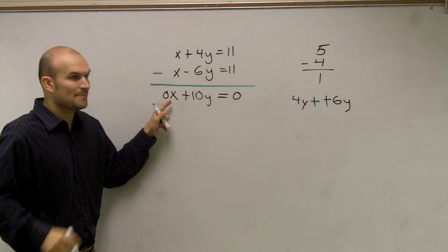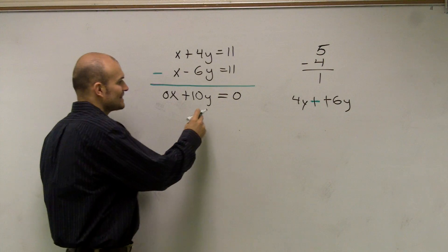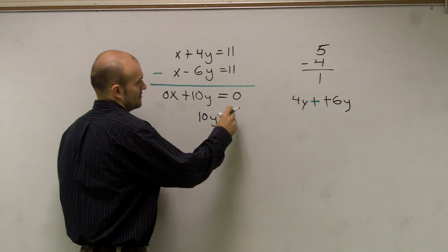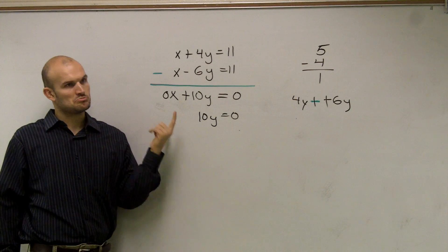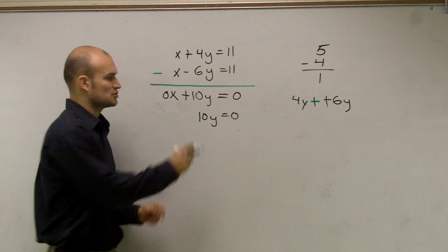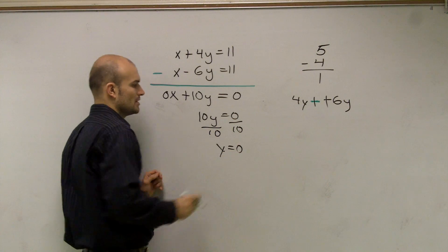Then 11 minus 11 is 0. So now do you guys see what happens? What's 0 times anything? 0. So what I did was I just eliminated my x variable. See that? Isn't that cool? It's pretty easy. So now solve for y. I have to divide. I have to get rid of that 10. y equals 0.